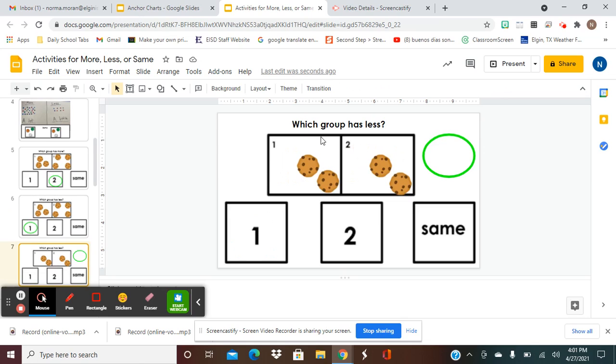For the last question in our activity, it says which group has less? So we're going to decide if group one has less, if group two has less, or if they're just the same. What do you think? Let's count the cookies. Group one has one and two. Group one has two cookies. Group one has two cookies, and then group two has one and two. Group two also has two cookies. They both have two cookies.